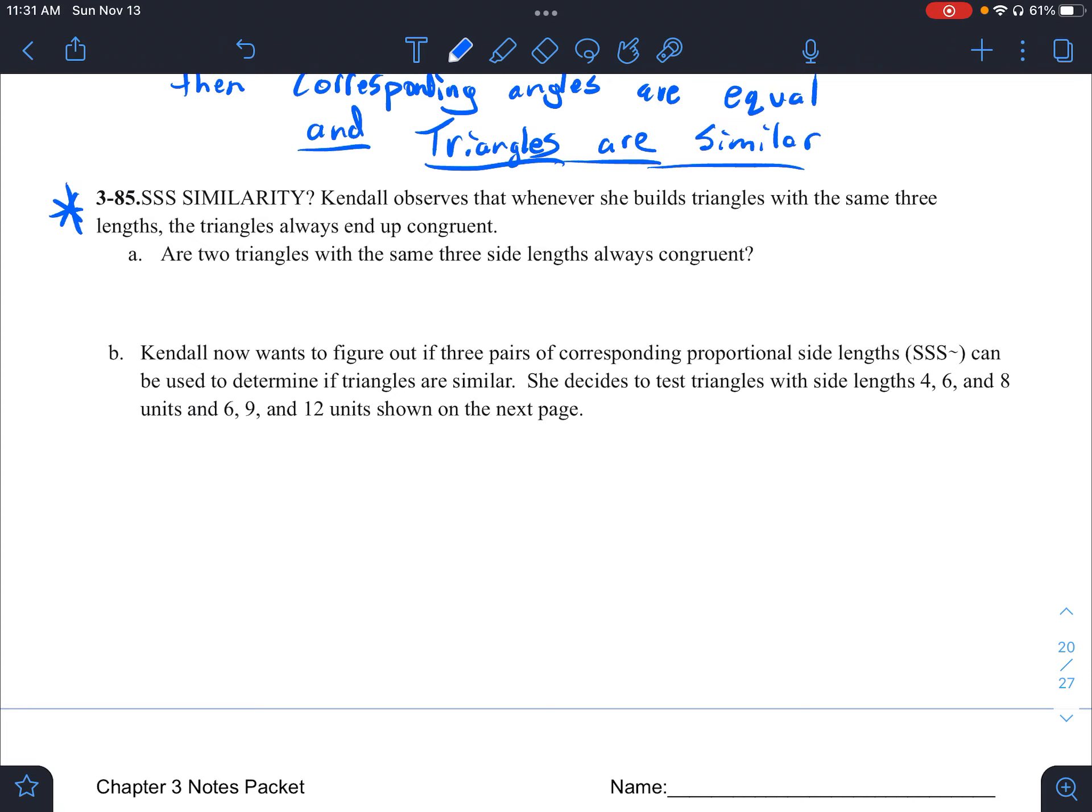So looking at this one, are two triangles with the same three side lengths always congruent? This one, yes. Side side side congruency is when a zoom factor is one. We'll prove this later on, but at this point, I will just take it as fact.